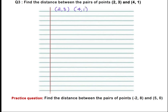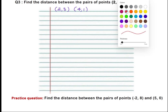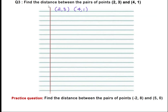The two points are (2, 3) and (4, 1). Mark them as x1, y1 and x2, y2. So x1 equals 2, y1 equals 3, x2 equals 4, and y2 equals 1. The distance between two points is given by the formula: d equals square root of (x2 minus x1) whole squared plus (y2 minus y1) whole squared.